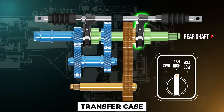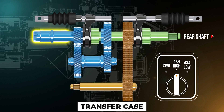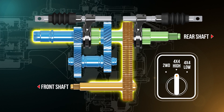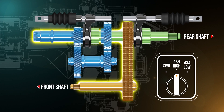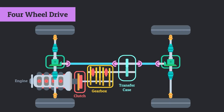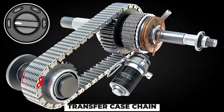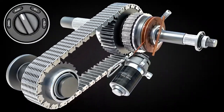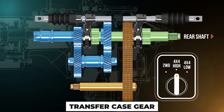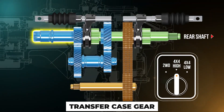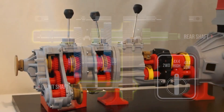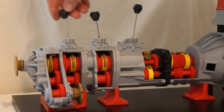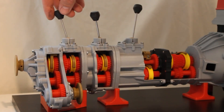The transfer case connects the rotation to the rear differential and the front-wheel differential through gears. Transfer cases are divided into two types based on vehicle weight. Light vehicles typically use a chain, considered lighter and quieter. On the other hand, heavy-duty vehicles usually rely on gear arrangements. Since the working principle of both is similar, we will use the heavy-duty vehicle's transfer case as our example.